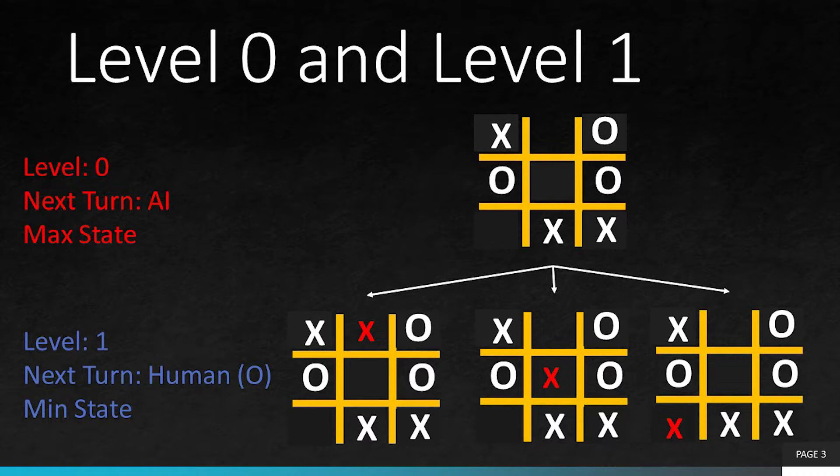Minimax algorithm is always going to favor the AI as we have created this algorithm so that the AI can play against human. In this particular instance, we are going to draw the entire game tree from level 0 to determine what the next move of the AI should be.